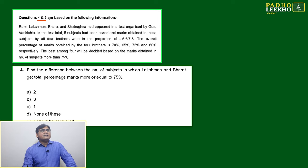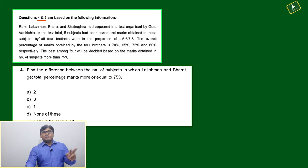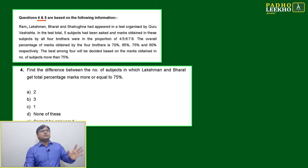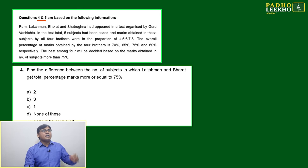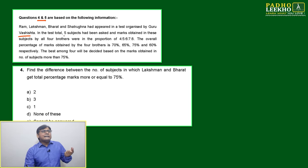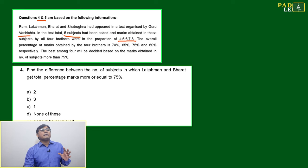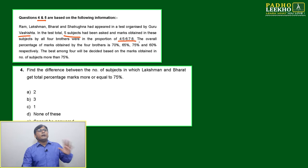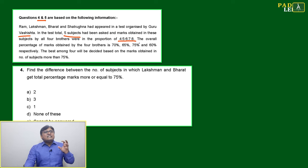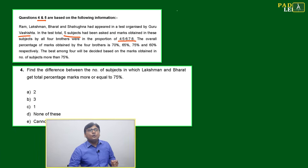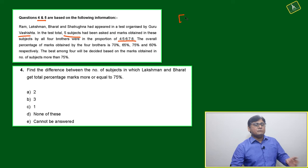Next question — question number four and five, with one common information. The question is story-based: Ram, Lachman, Bharat, and Satrugna have appeared in a test organized by Group Assistant. In this test, five subjects are asked, and the marks obtained by all four brothers are in the proportion 4:5:6:7:8. Surprisingly, all four brothers are getting the same ratio of scores across all five subjects.